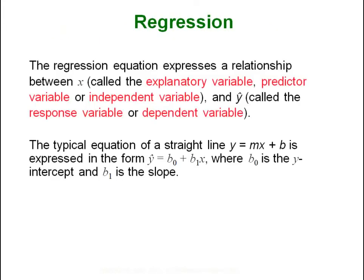Our regression equation is going to express some relationship between x and y, where x is what you would call the independent variable if you were running a scientific experiment. In other cases you would normally refer to it as the explanatory or predictor variable. Y is going to be your response variable, or if you were running experiments you could call it the dependent variable. So it is kind of your input and output.